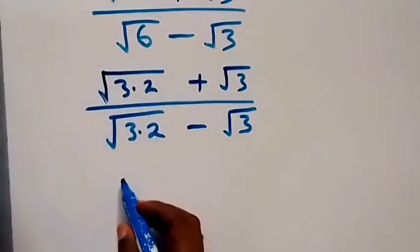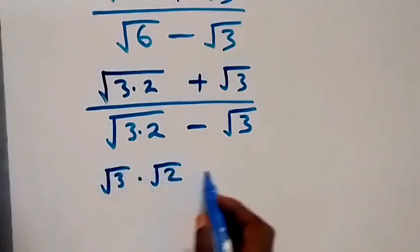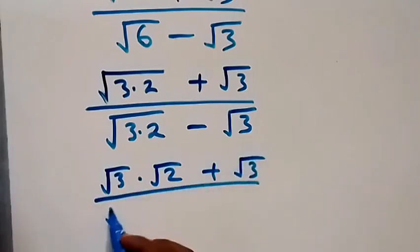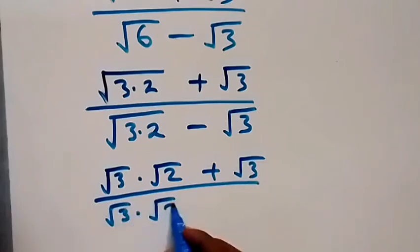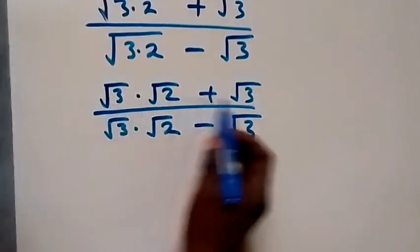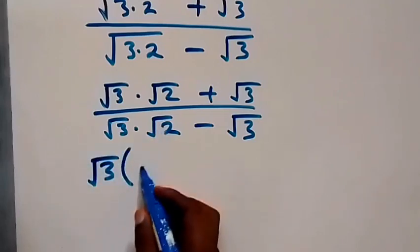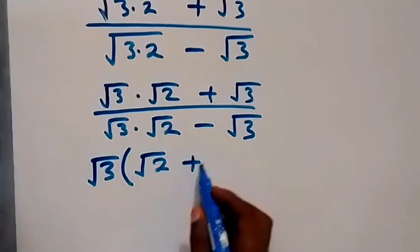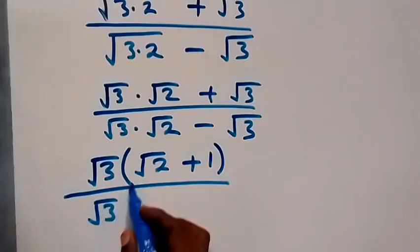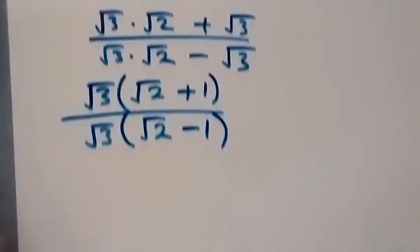From the law of surds, here we can separate this into two roots: root three times root two, then plus root three, over root three times root two, then minus root three. From here, root three is a common factor — let's factor it out. That will be root three into bracket (root two plus one) over root three into bracket (root two minus one).